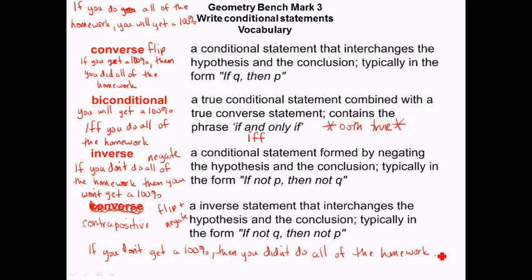If you were in another math class where the teacher actually graded the homework, that original statement is no longer true. But the converse would still be true, because if they graded all the homework and you got 100%, that means you did it all. So sometimes they're both true, sometimes one or the other is true, and it may not be the original statement that's true — it may be when you flip it that it becomes true.